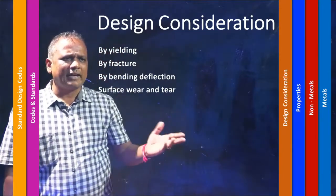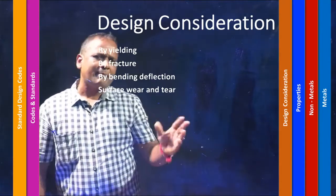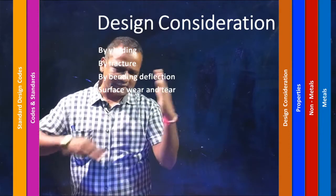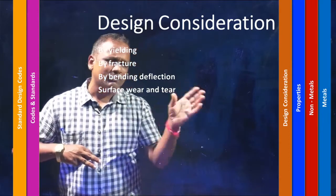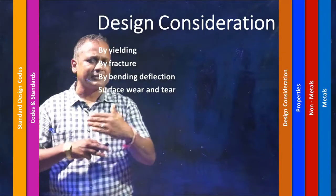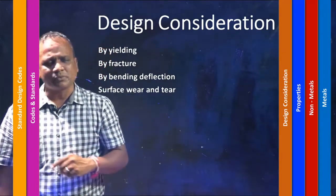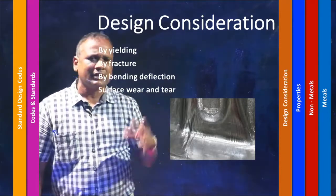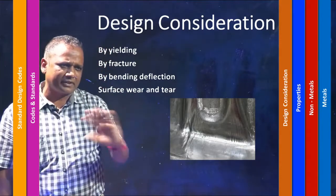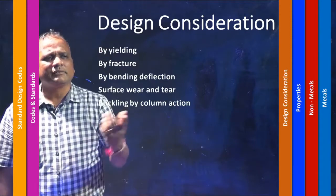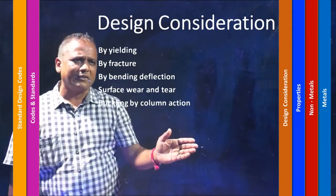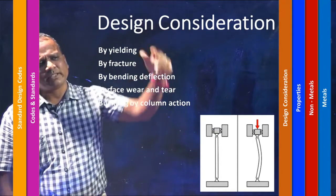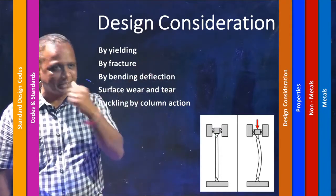Next would be surface wear and tear, which happens by rubbing action. When two materials rub together, material removal takes place at the surface — that is surface wear and tear. A good example is the brake shoe used in vehicles, which undergoes a lot of surface wear and tear. Another consideration is buckling and column action — when a load is applied on a column, it undergoes buckling.